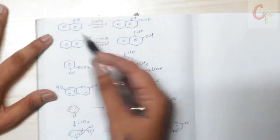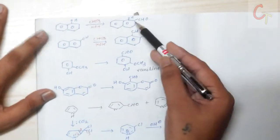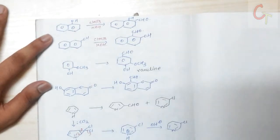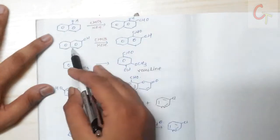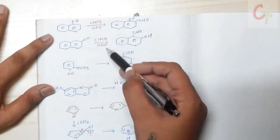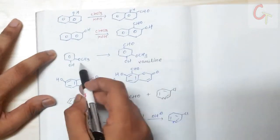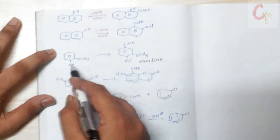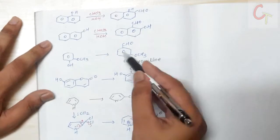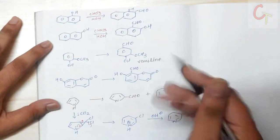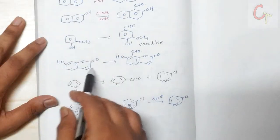Alpha-naphthol reacted with chloroform and potassium methoxide gives the ortho-substituted aldehyde. Similarly, beta-naphthol reacted with chloroform and base (potassium methoxide) also gives the ortho-substituted aldehyde. Ortho-methoxy substituted phenol (guaiacol) reacted with the same reagents gives the para-substituted product due to steric hindrance at the ortho position.